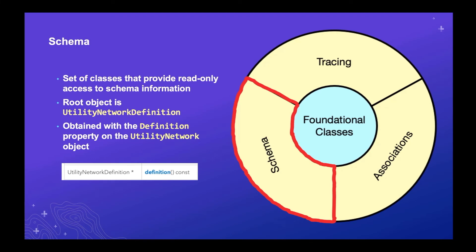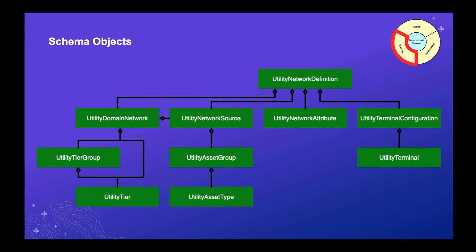The schema classes provide read-only access to all utility network schema information. You start with the utility network definition, easily obtained by calling the definition property on the utility network object. There is a whole set of schema objects — domain networks, tiers, network sources, asset groups. If you're familiar with the Pro SDK for the utility network, you'll notice an almost identical structure: the objects and their properties follow the same patterns established by the underlying information model.